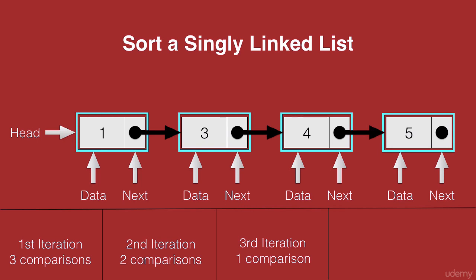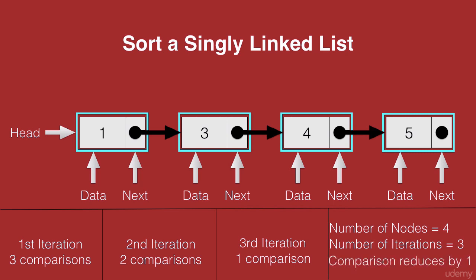Now if we analyze the pattern: when we had 4 nodes, the number of iterations were 3, and at each iteration the number of comparisons kept getting reduced by 1. The technique we used here to sort is an algorithm called bubble sort. In each iteration of a bubble sort, the largest element is bubbled to the end of the list. So in the first iteration 5 was bubbled to the end, in the second iteration 4 was bubbled to the last second position, and so on.